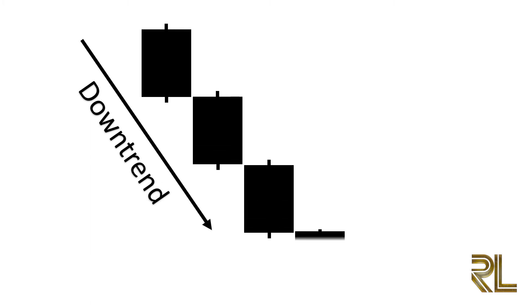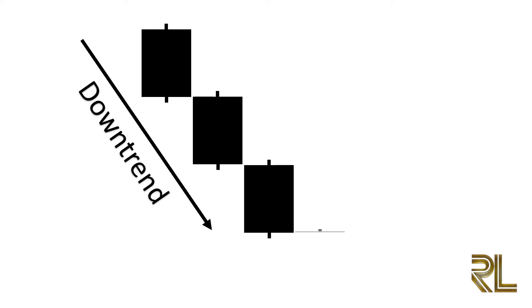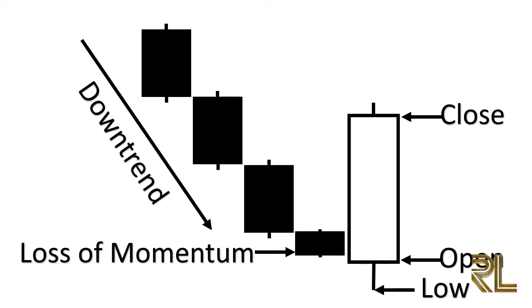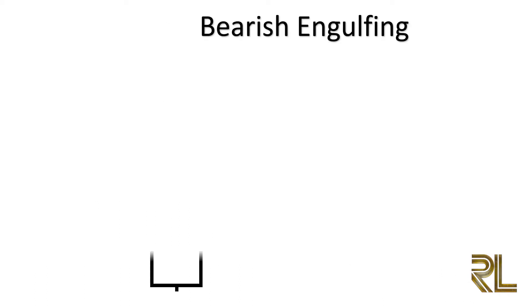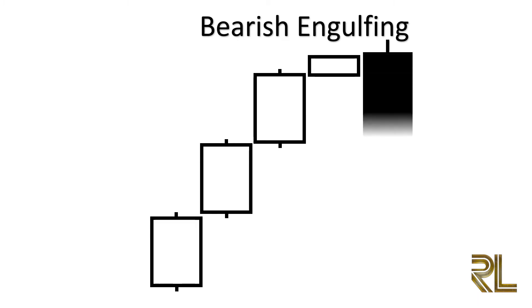The psychology of the bullish engulfing bar: the bears pull price all the way down following a prolonged downtrend, then the bulls open price below the low of the previous bearish move, suggesting continuation of bearish force. The bears then lose momentum, the bulls take charge and lead price up, eventually closing above the previous candle. The bulls have now fully overridden the bears.